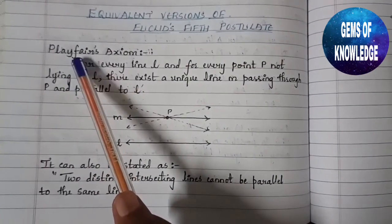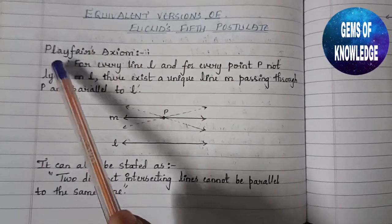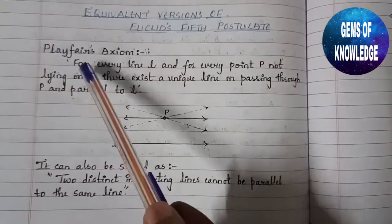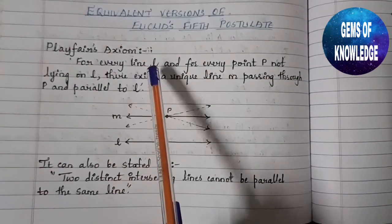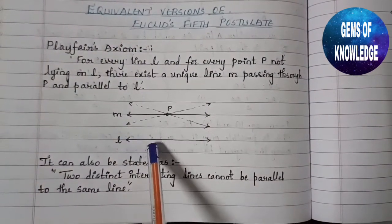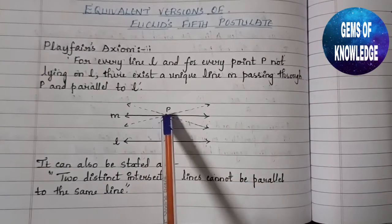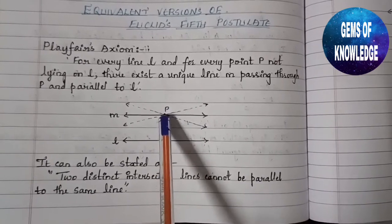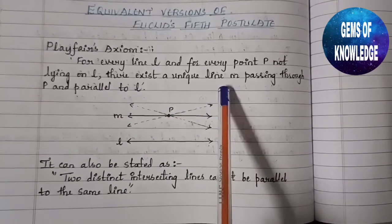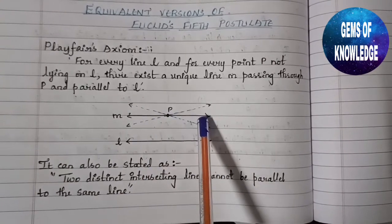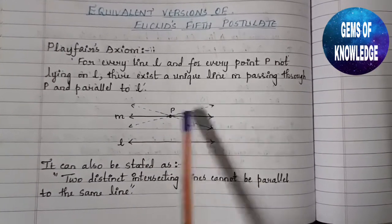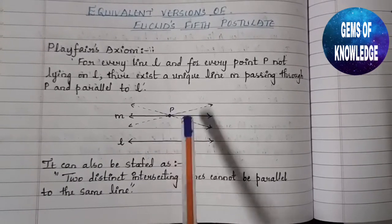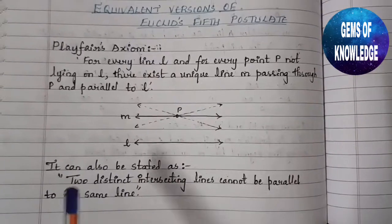In your textbook, one version is given which is called Playfair's Axiom, which is similar to Euclid's fifth postulate. The axiom states: for every line l, and for every point p which is not lying on l, there exists a unique line m passing through p which is parallel to line l. This is Playfair's Axiom.